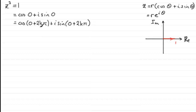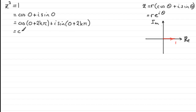The 2kπ means we could go around any multiple of 2π and keep coming back to the same point. We can simplify this by dropping the zero, writing it as cos(2kπ) + i·sin(2kπ).